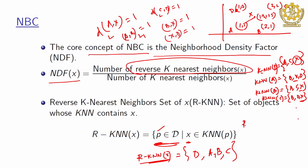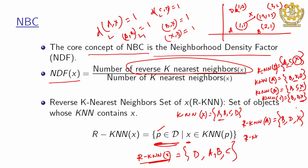Now compute reverse KNN of a. A appears in KNN(b), KNN(d), and also KNN(x) — since KNN(x) = {a, b, c, d}. So reverse KNN of a = {b, d, x}. Similarly, for the reverse KNN of b: b appears in KNN(a), KNN(c), and KNN(x), so reverse KNN(b) = {a, c, x}.